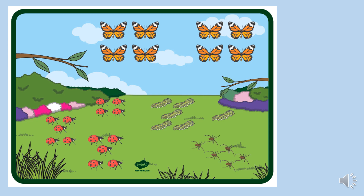So here on this example I have got a picture of different mini beasts in a garden. We're going to have a look at these caterpillars just here on the screen, and I'm going to estimate that there's five, because I don't think there's any less than five and I definitely don't think there's more than ten. So I'm going to go with five. Now let's count them together: one, two, three, four, five, six.